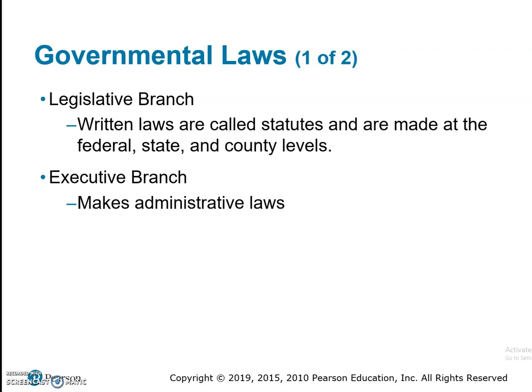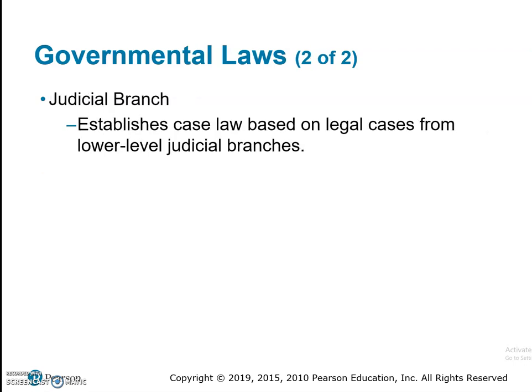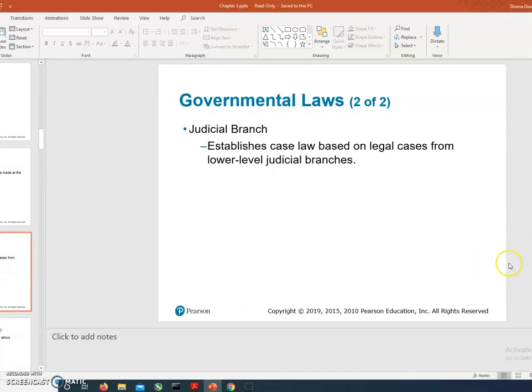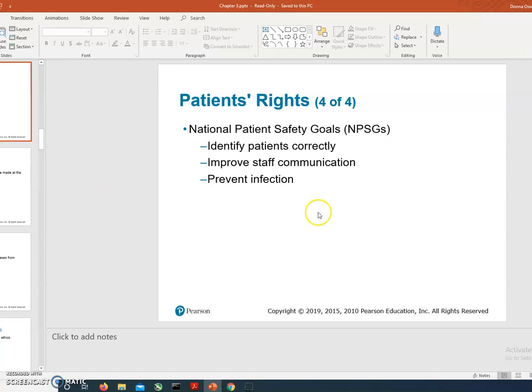There are three branches of government: The legislative branch creates written laws called statutes, made at the federal, state, and county levels. The executive branch makes administrative laws. The judicial branch establishes case law based on legal cases from lower-level judicial branches. We'll also look at the National Patient Safety Goals (NPSGs), which identify patients correctly, improve safe staff communication, and prevent infection — including the three-step patient identification process.